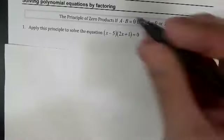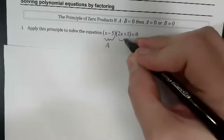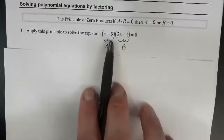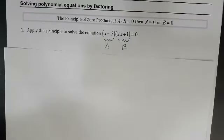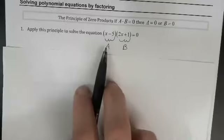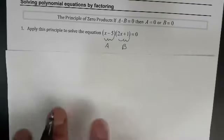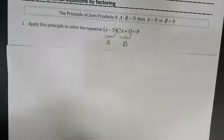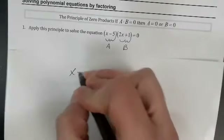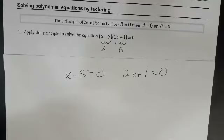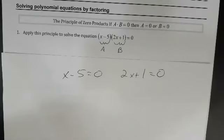So we want to solve using that principle. This term is like my A, and this term is like my B — I have this thing times this thing equal to zero. This is called the Zero Product Principle: if a×b=0, then either A is zero or B is zero. So I know either X minus five equals zero, or two X plus one equals zero. This is what the zero product principle is telling me — if I have factors multiplied together equaling zero, one of those factors must equal zero.